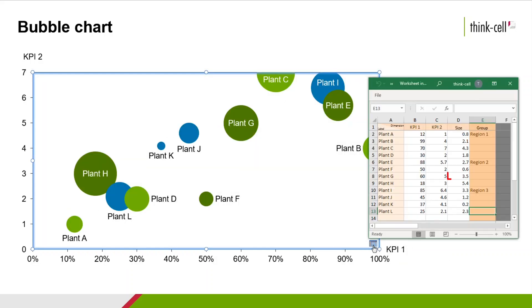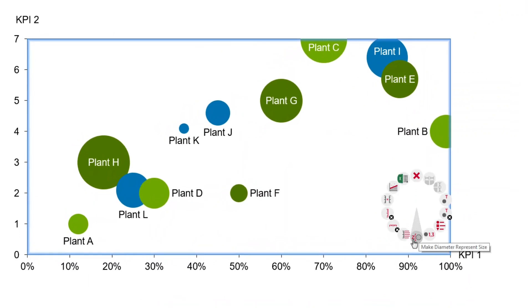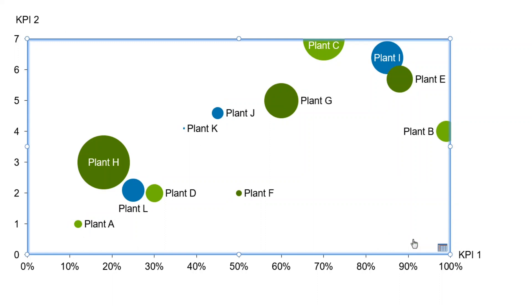By default, the Size value in the datasheet is proportional to the area of the bubble in the chart. Right-click on the chart and pick Make Diameter Represents Size to set the size proportional to the diameter of a bubble.